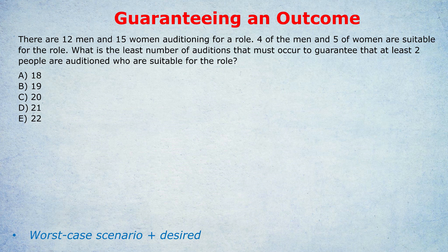You're about to learn a great higher-level probability trick that the vast majority of students don't know how to do. It comes up occasionally at the higher level of the GMAT and the GRE, and it's to do with guaranteeing an outcome. Usually the word 'guarantee' will be in the question or a synonym for it. Let's look at a first example and then we'll do a harder example afterwards.